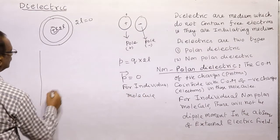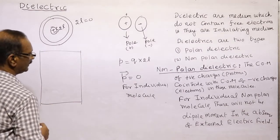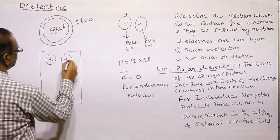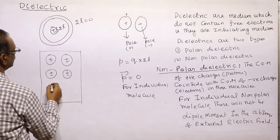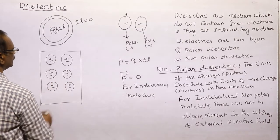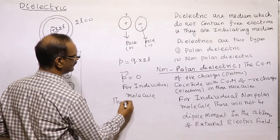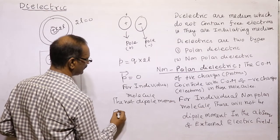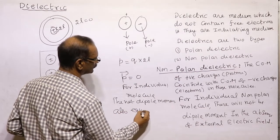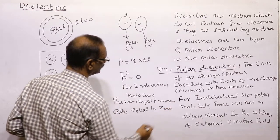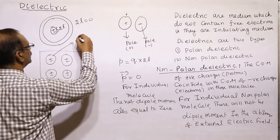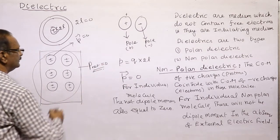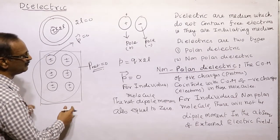In a nonpolar dielectric, since positive and negative charges coincide in every molecule, the individual molecule dipole moment is zero, and therefore the net dipole moment of the entire dielectric is also zero.